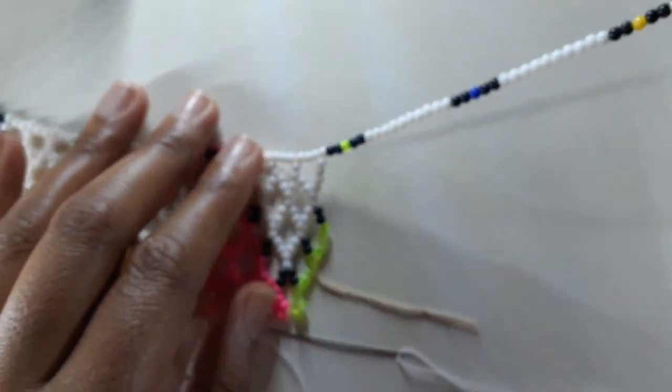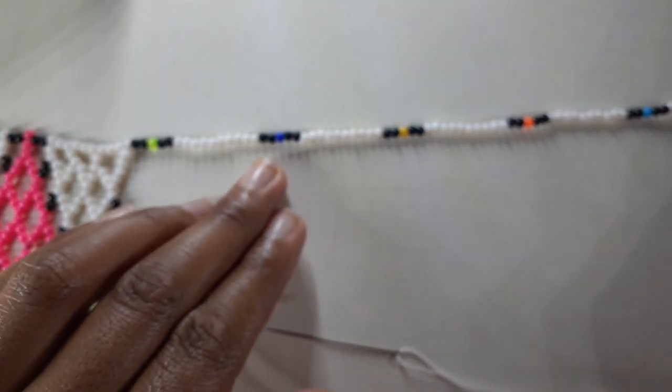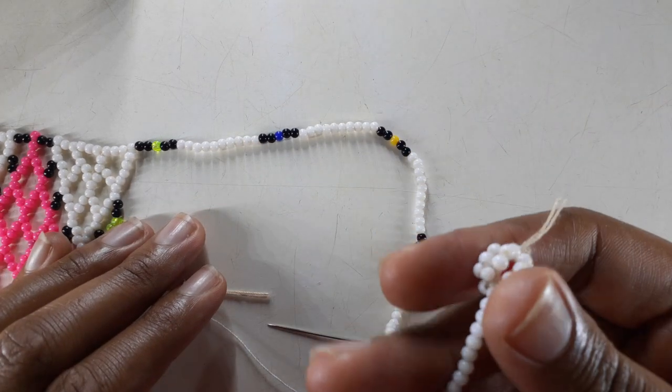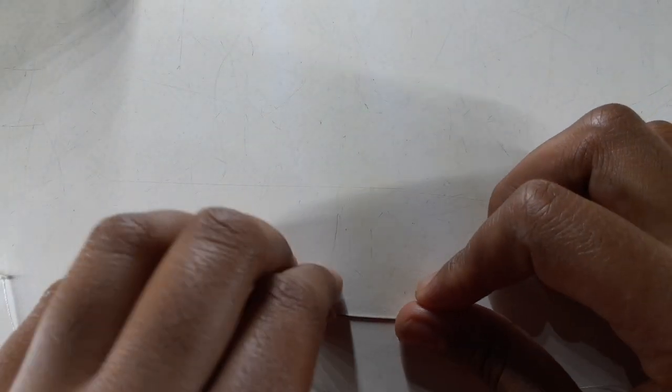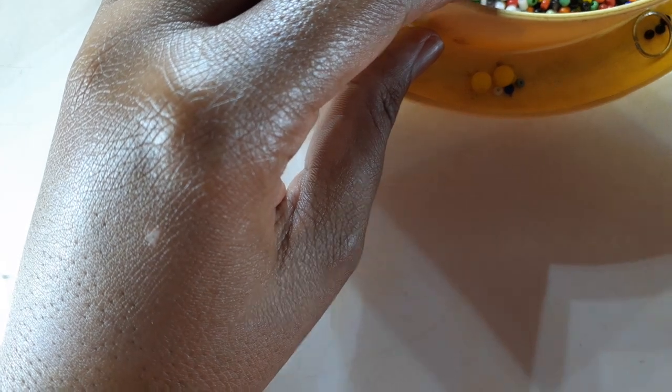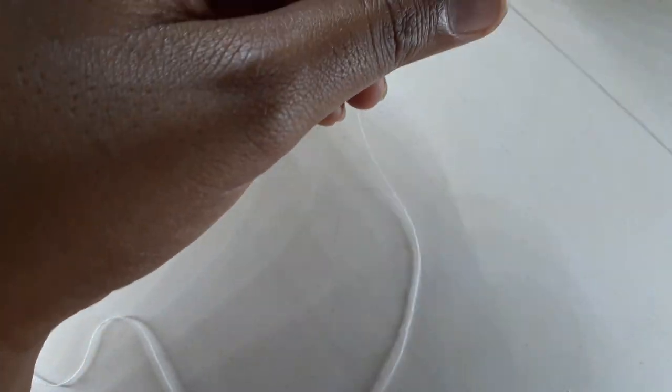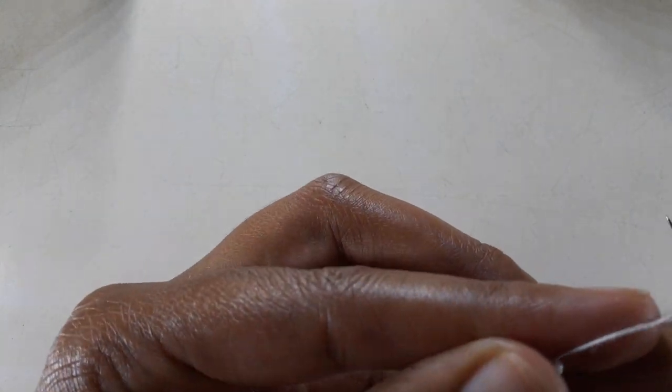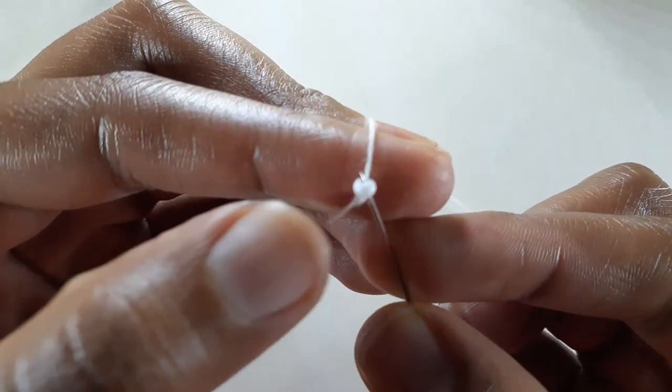For today we'll be doing the neckline. That's the name I just created right now. We're going to start off with our button. So I'm going to take this bead and I'm going to push it to the end. I'll be making a stopper bead. I'm going to insert my needle in the opposite direction and pull, creating a loop around this bead.